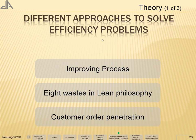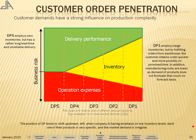We will look at different approaches to solve the efficiency problem of customer order penetration. Customer demands have a strong influence on production complexity. We have a chart where we compare delivery performance, inventory, and operations.